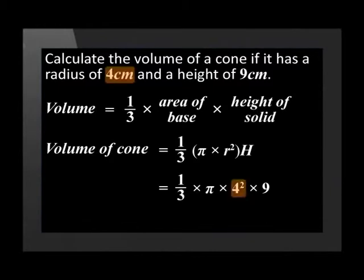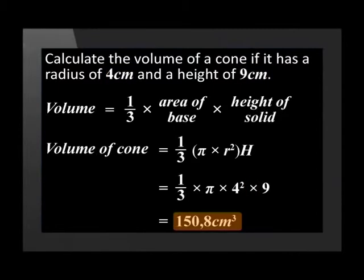The radius is 4 and the height is 9. So the volume of the cone is 150.8 cm³ rounded to one decimal place.